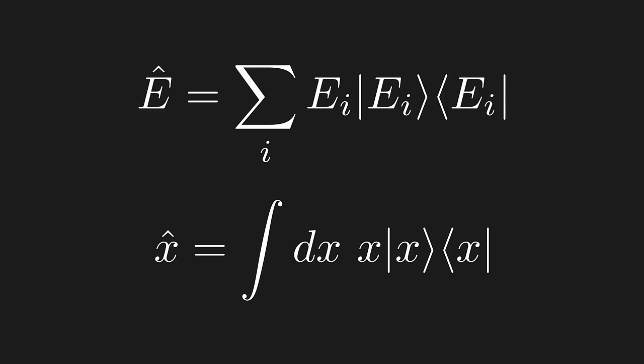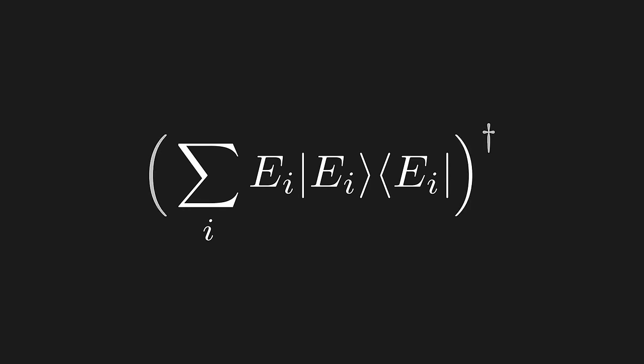So, why is this useful? Well, let's use this form for observables to see what the Hermitian adjoints are. We'll do the discrete case here, but note that the logic is the same in the continuous case.